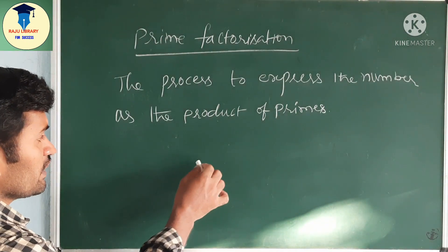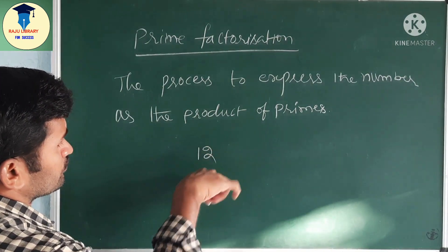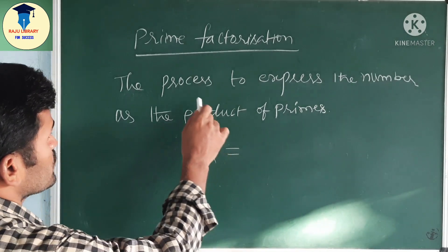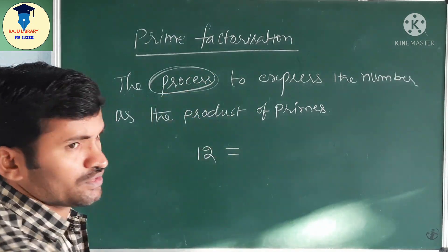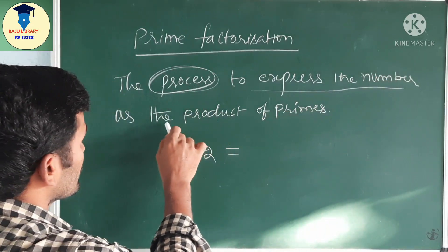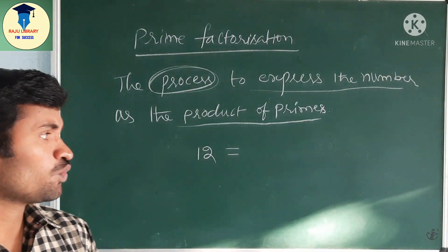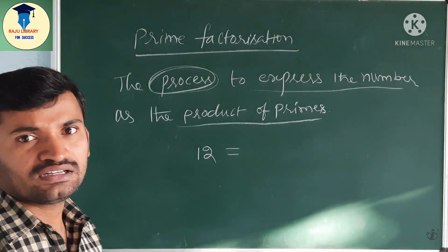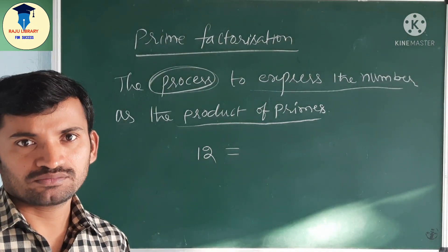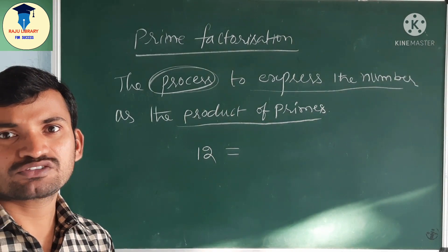So, if you take any number, for example, if you take number 12, how can we write it as a product of primes? Here we have to observe the process — the method to express the number as the product of primes. It means we have to write this number 12 as a multiplication of prime numbers. Product means multiplication.